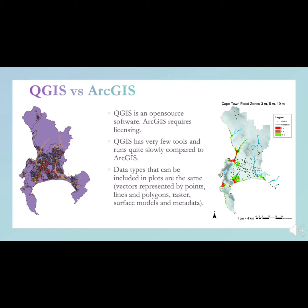As mentioned earlier, a number of different data sources can be incorporated into a GIS project, and these maps include points, line, and polygon data, with the ArcGIS map also including a digital surface model.